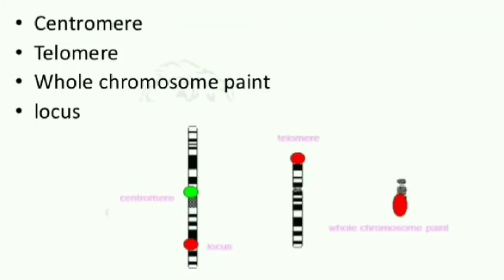FISH probes are of four types: centromere probe, telomere probe, whole chromosome paint, and locus probe. In the first case, the centromere probe goes and paints only the centromere region, whereas in telomere it goes and paints the telomere region, same as the case in locus.